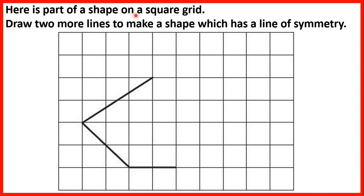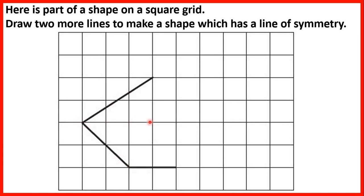Here is part of a shape on a square grid. Draw two more lines to make a shape which has a line of symmetry. If a shape has a line of symmetry we'll have the same reflected on both sides. Let's see if we can make a shape with a horizontal line of symmetry. For this corner we go two squares down from the line, but two squares up from the line we get a point that isn't one of the corners, so we can't have a horizontal line of symmetry.